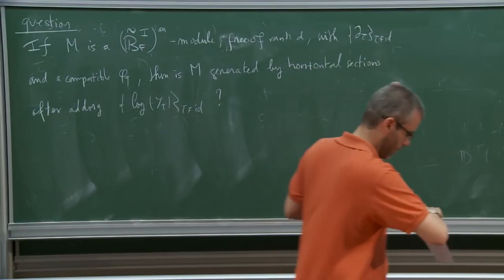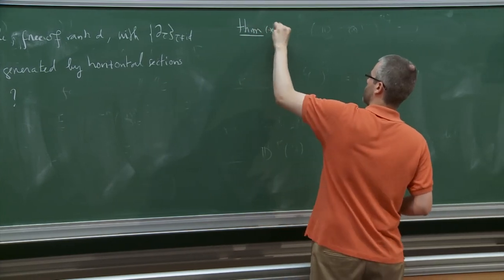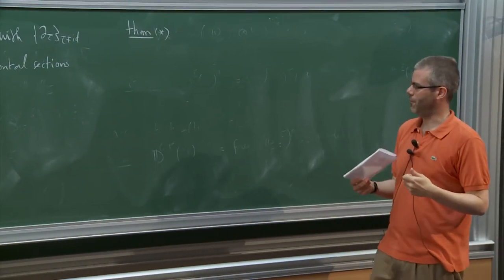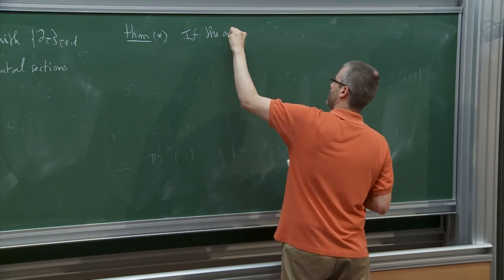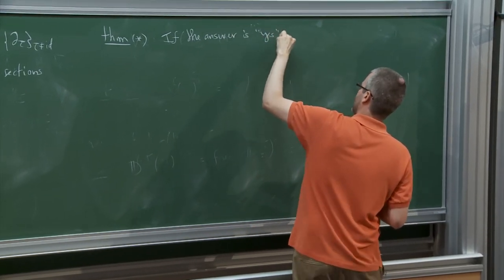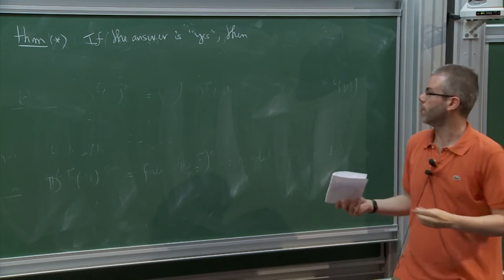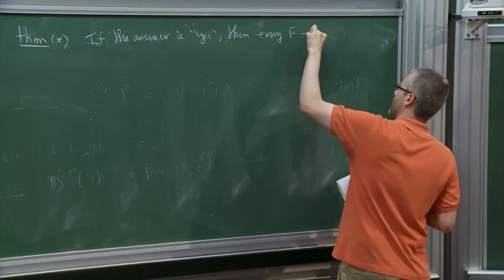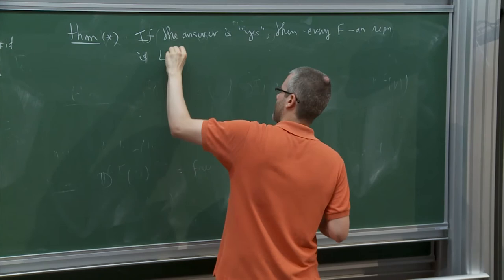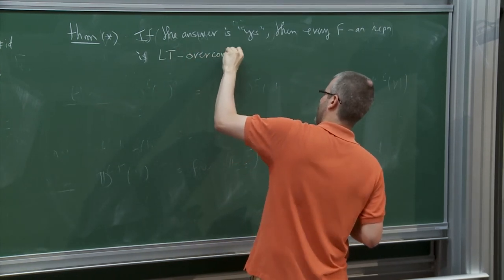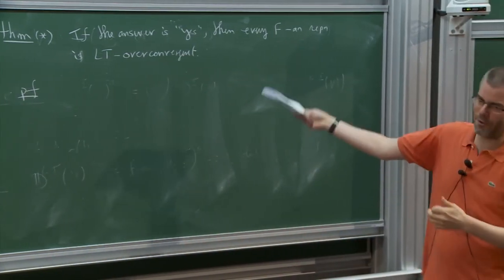If you know Crew's conjecture in one dimension — the classical monodromy theorem for p-adic differential equations — this is the analog in higher dimensions. You don't have to make a finite extension here, because you're left with a set of solutions defined over a ring big enough that Hilbert's theorem 90 will allow you to descend the solutions as you wish. So this is my question. And let me tell you in the final two minutes why — theorem with a star, meaning it will really be a theorem once I've sat down and written the proof — if the answer is yes, then every F-analytic representation is Lubin-Tate overconvergent.